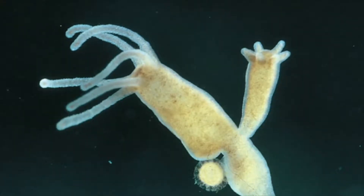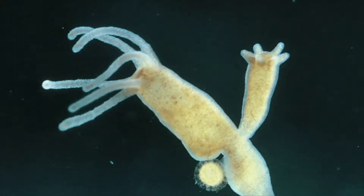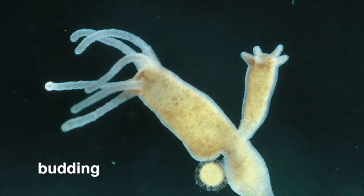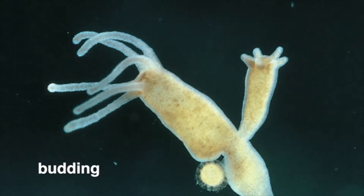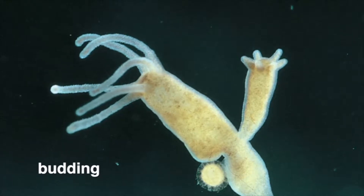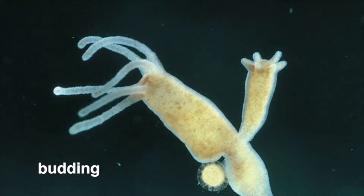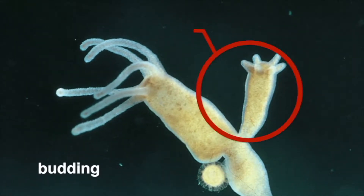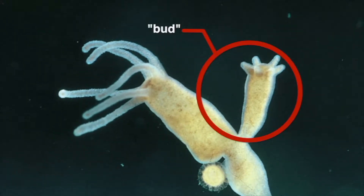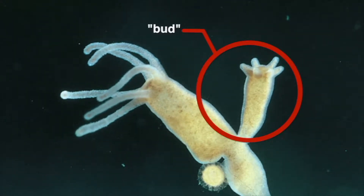Some animals, such as this hydra, reproduce by budding. Budding occurs when an organism grows a whole new organism on its body. The resulting individual grows and develops and may break off or be released when fully grown.